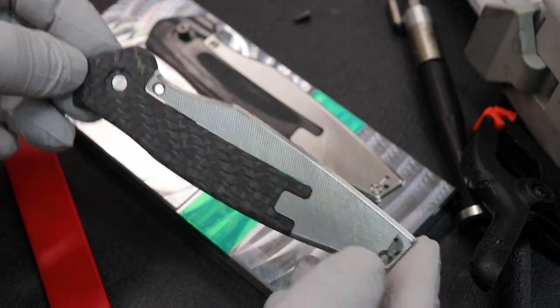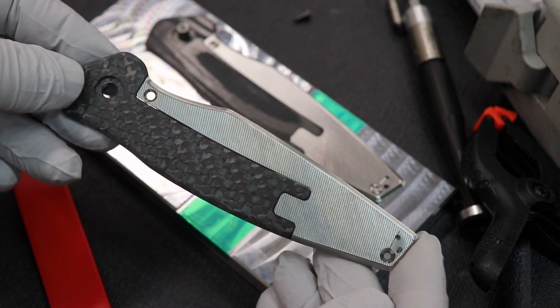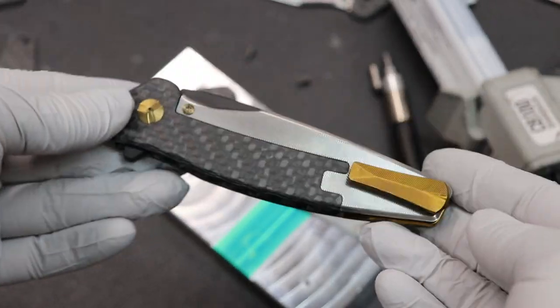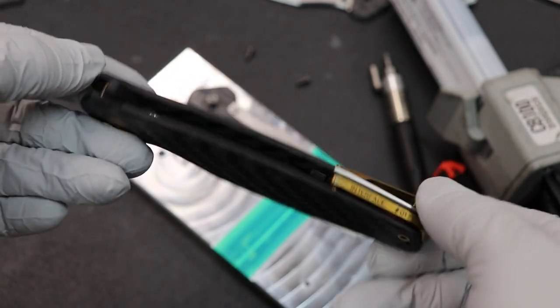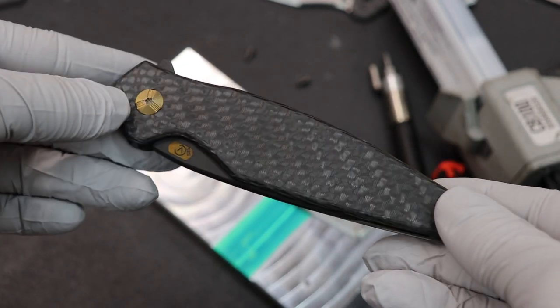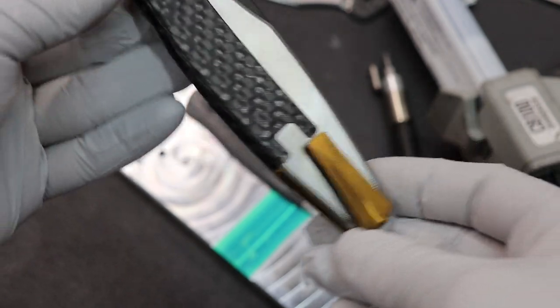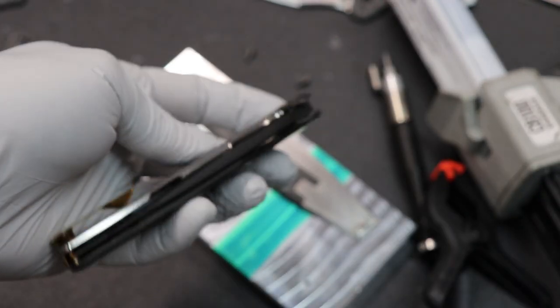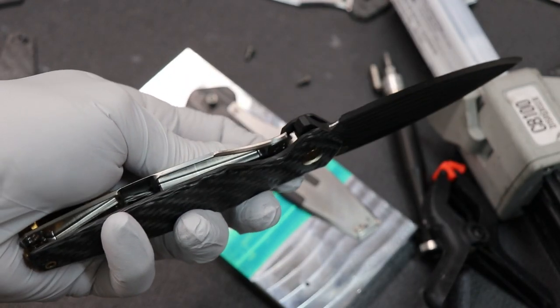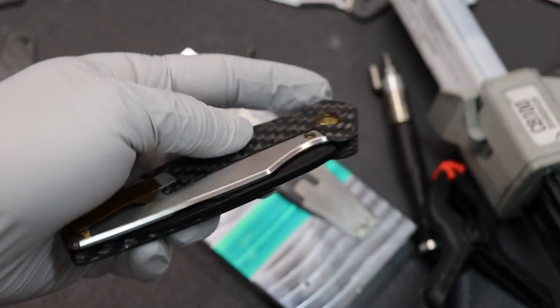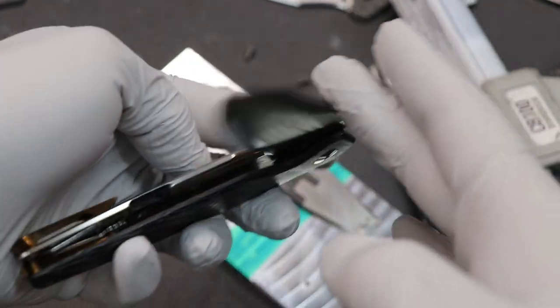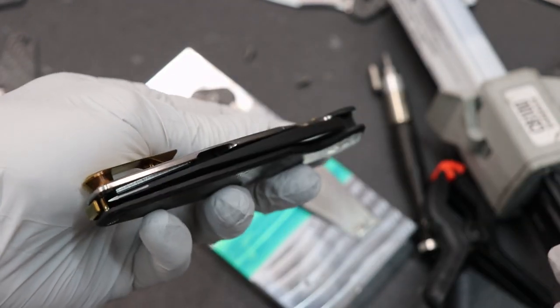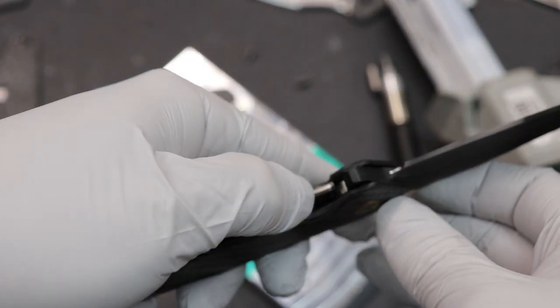I guess the last thing to do would be to show you a knife with one of these all assembled. So here's one that I've been carrying for a little bit. This is number 17 and I'm using as my test article and it's all working really, really well. It is super smooth, has the nice, the same sound that it used to. So none of the really important things have changed. Lockup is still good.